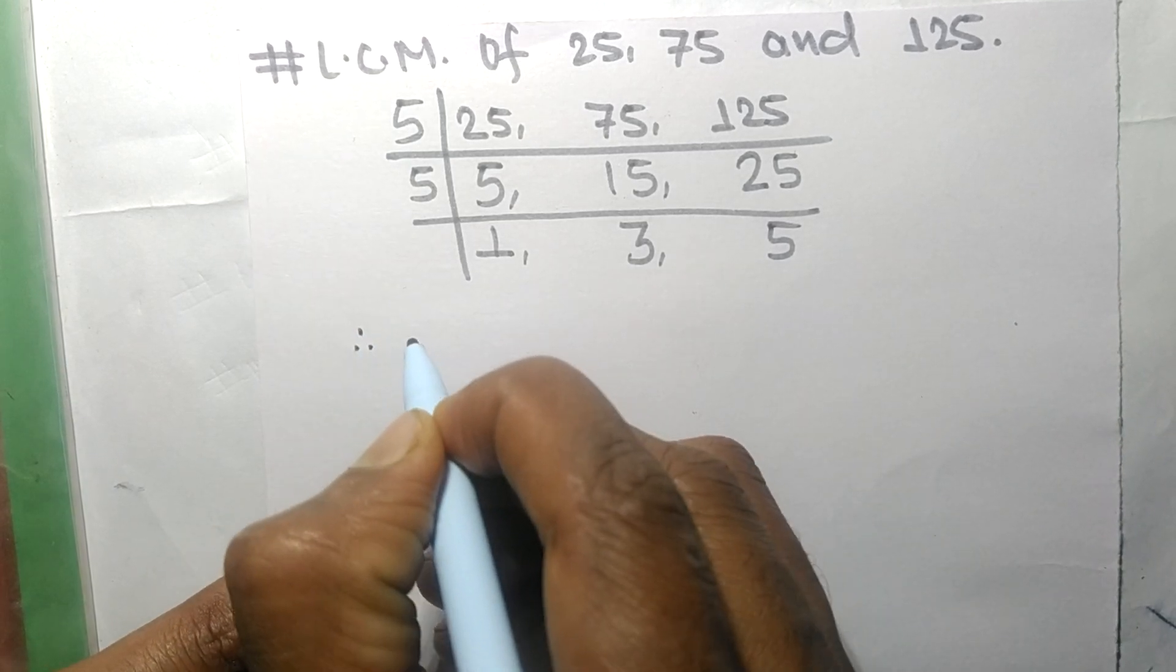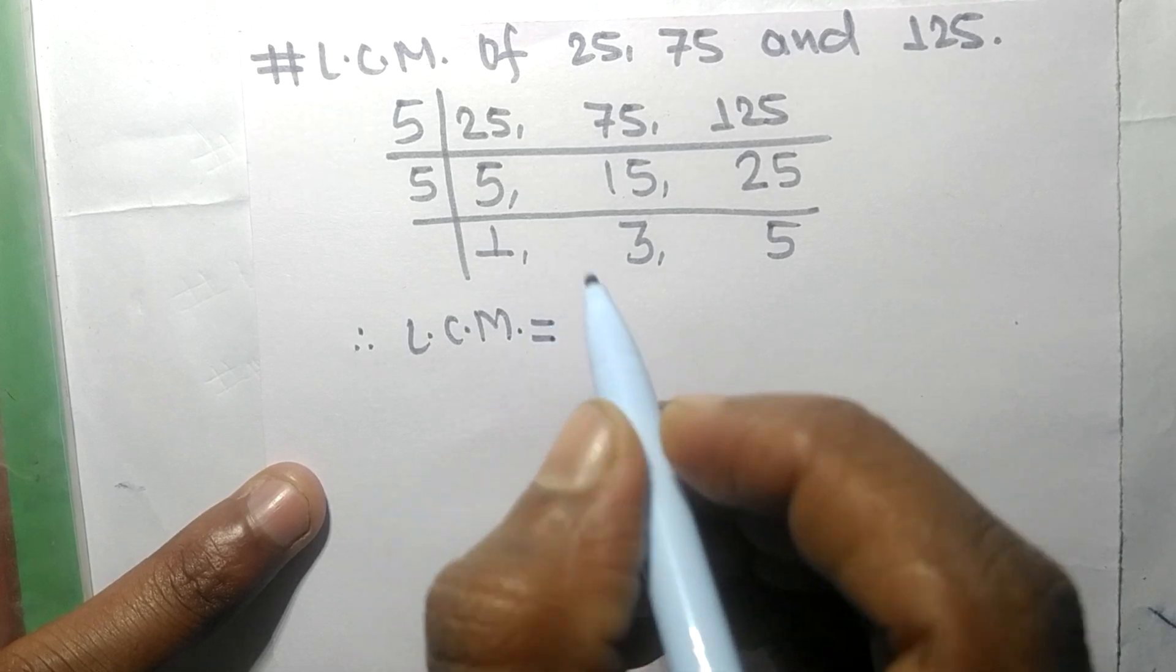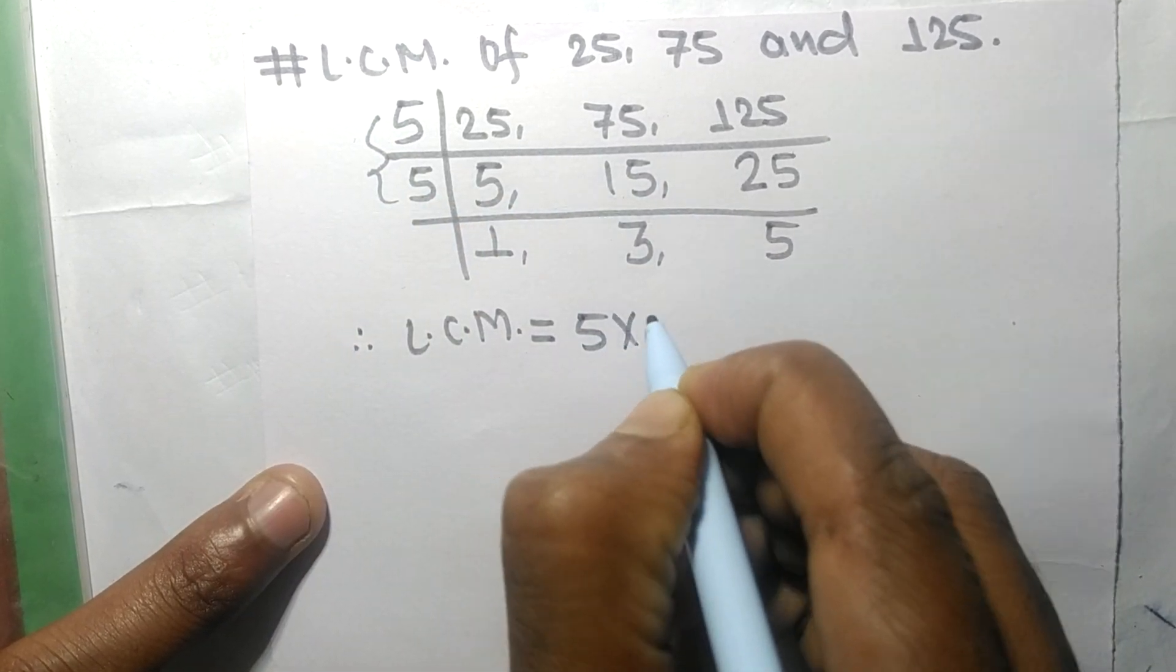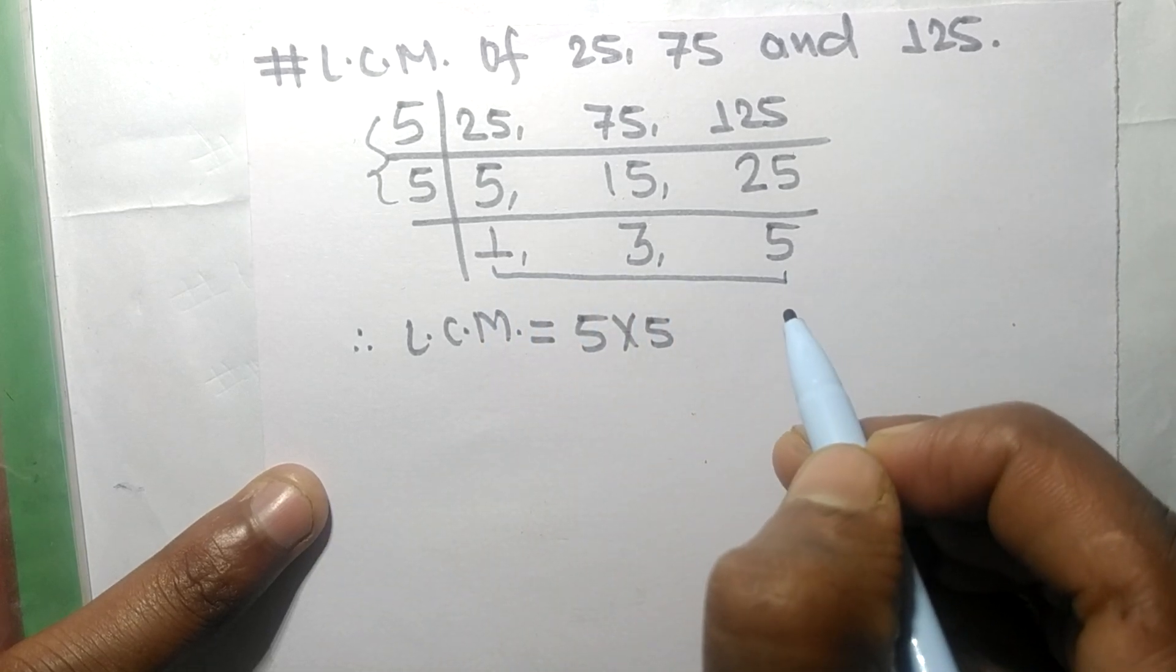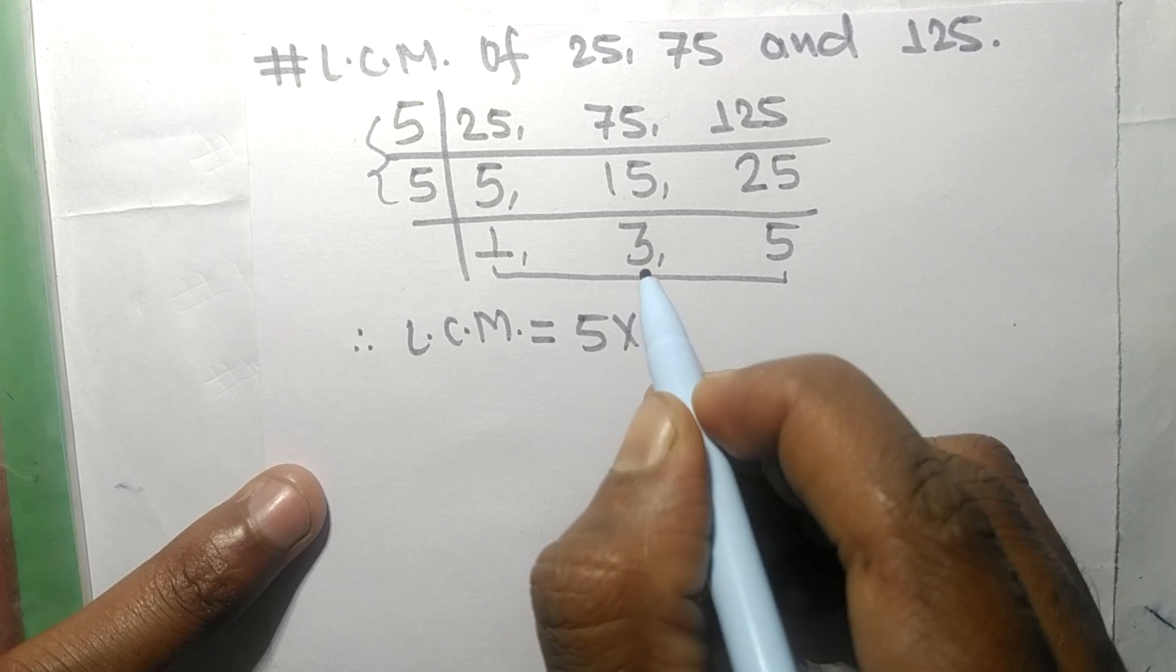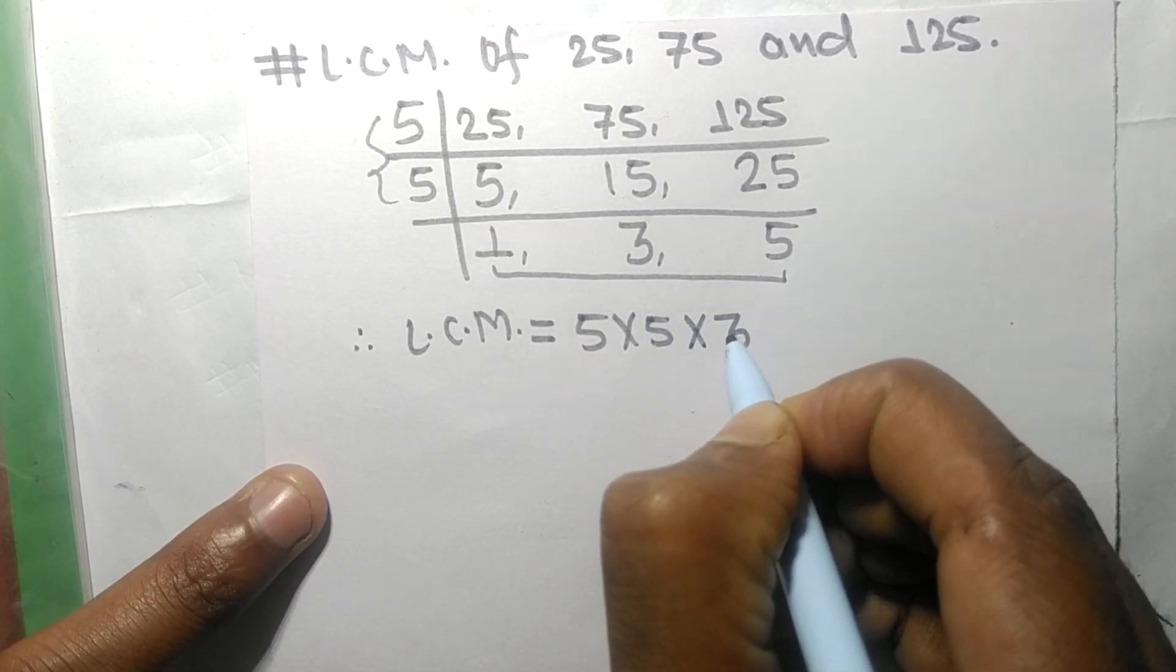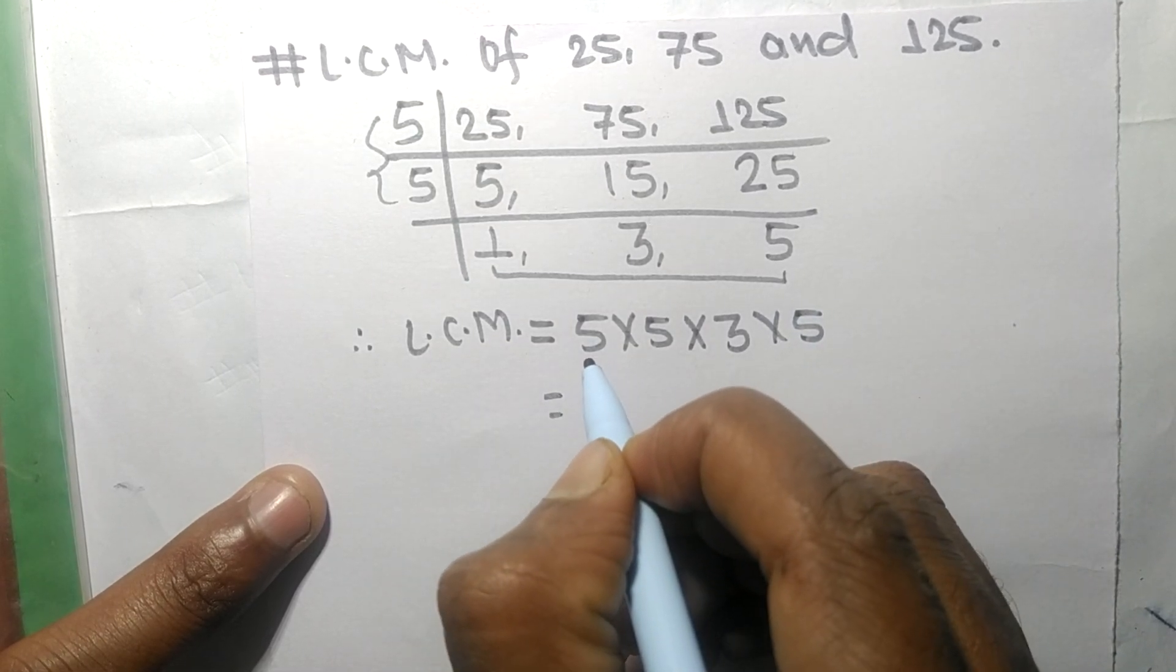Therefore, the LCM is equal to, from this side, 5 times 5, and from this side we choose the numbers greater than 1, that is 3 and 5. So multiply by 3 and 5.